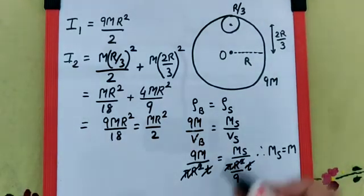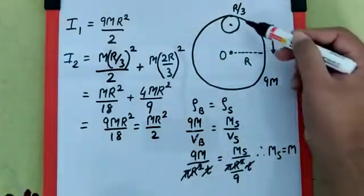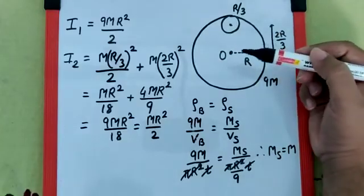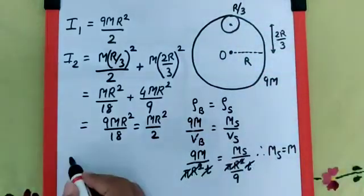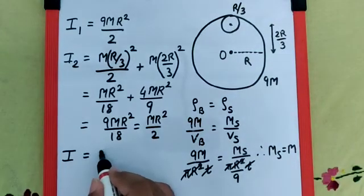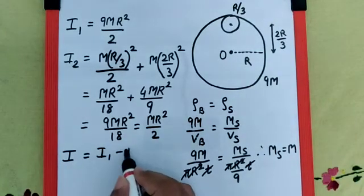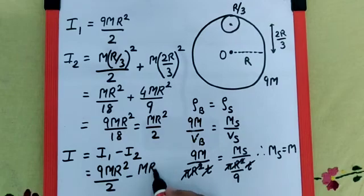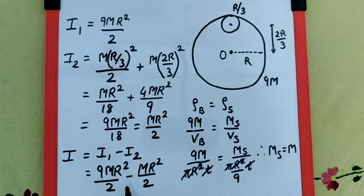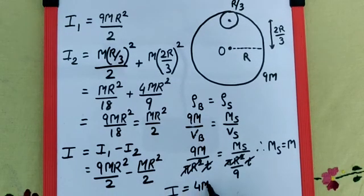Now, we want the moment of inertia of the remaining part of the disk, which means we need to subtract the moment of inertia of the smaller disk from the bigger disk. That means the required I is I₁ minus I₂, that is 9mr²/2 minus mr²/2, which is definitely 8mr²/2, and that will be 4mr². And so the final answer is 4mr².